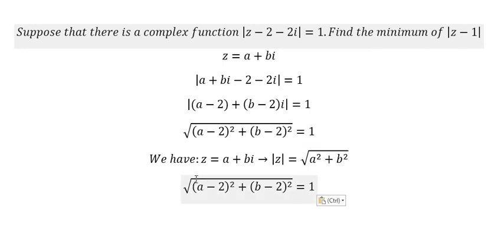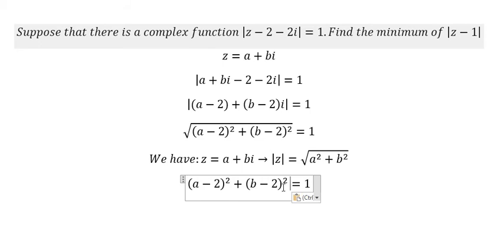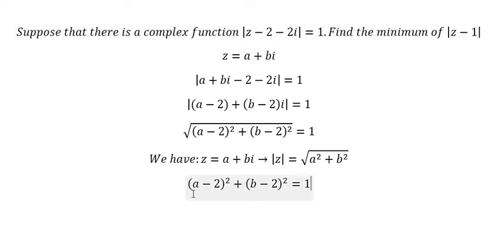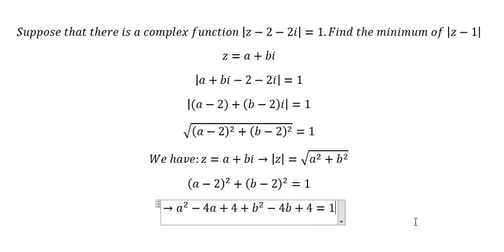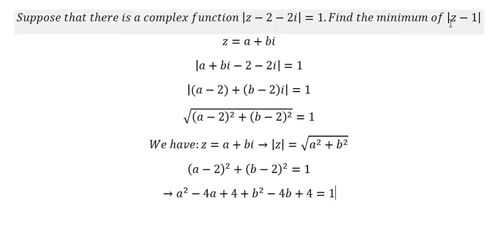Now we need to cancel the square root — we square both sides and get number 1. Expanding, we get a squared minus 4a plus 4, plus b squared minus 4b plus 4, equals 1.